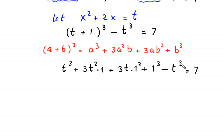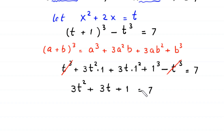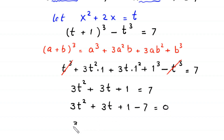The negative t³ cancels with the positive t³, and simplifying further this becomes 3t² + 3t + 1 = 7. Moving 7 to the left hand side gives 3t² + 3t + 1 − 7 = 0, and 1 − 7 becomes −6, so 3t² + 3t − 6 = 0.